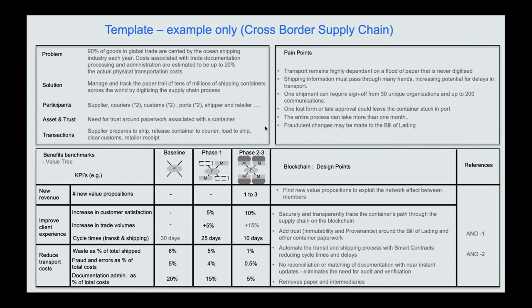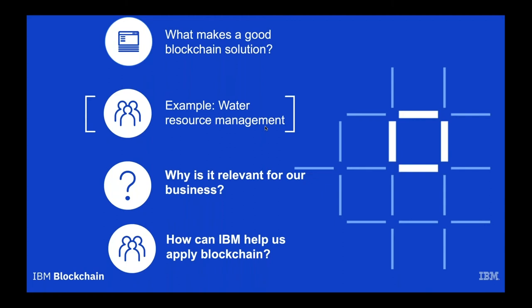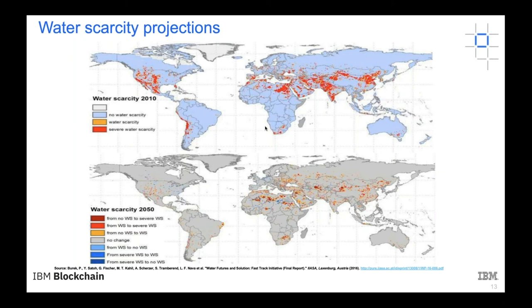Now moving to the water management example. From 2010 to 2050, it is predicted there will be water scarcity — this is a clear business problem that everyone is aware of. This now calls out to the business problem which means we have a problem of water scarcity that is clear and widely recognized.